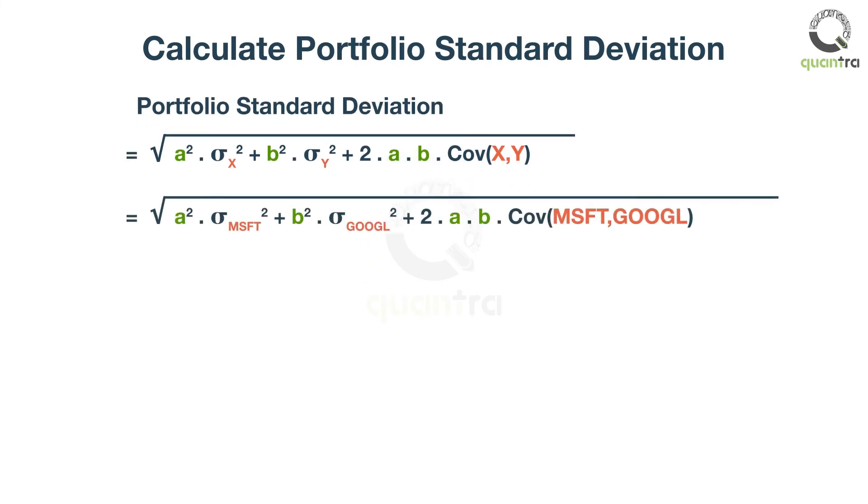The standard deviation values of Microsoft and Google, for the same period, are 17.81% and 19.15% respectively. Also, the covariance between Microsoft and Google is calculated and is equal to 0.0229. For equal weight allocation, the portfolio standard deviation comes out to be 16.89%.